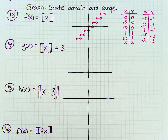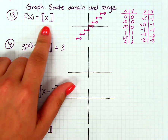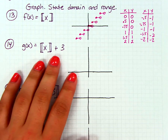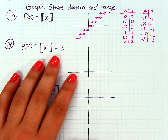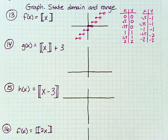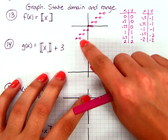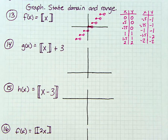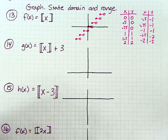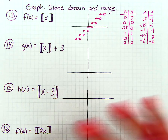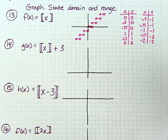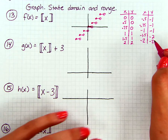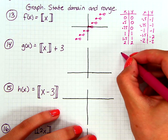In the previous video we graphed our step function, so now we're going to start adding numbers to it. I know it has to look something like this, so we're still going to be graphing segments. I just have to figure out the pattern for one of them, and then I have the pattern for the entire graph.